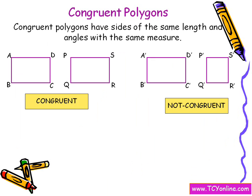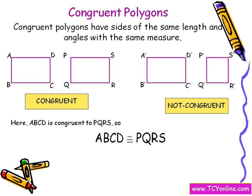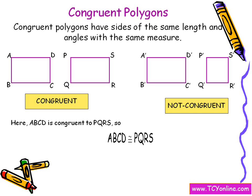So we are going to say that ABCD is congruent to PQR. We can write this as ABCD is congruent to PQR, where this is the congruency symbol.